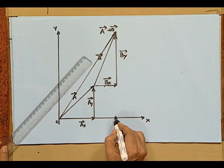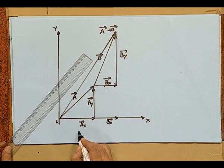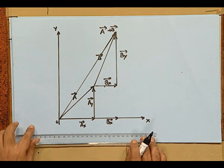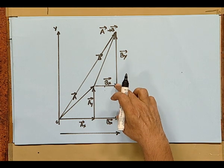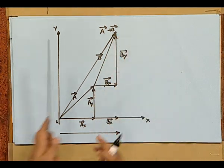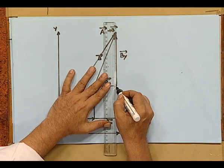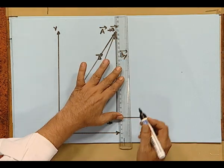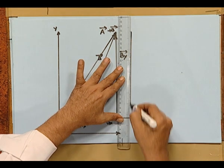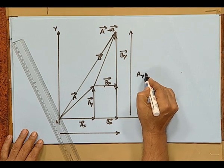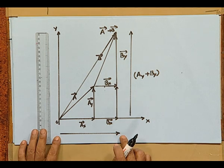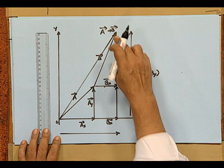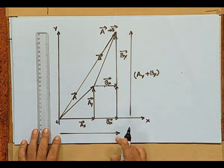Vector b is resolved along x and y directions, giving bx and by. So vector b is bx vector plus by vector. Now, because bx and ax are along the same direction — if I bring bx parallel down — that is the same as bx vector. So ax plus bx are along the same direction, giving the vector ax plus bx. Similarly, ay and by can be added because they are in the same direction. The sum of two vectors in the same direction is simply the beginning of one and the end of the other, giving the vector ay plus by.